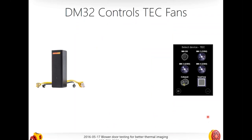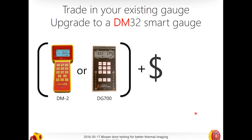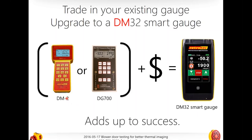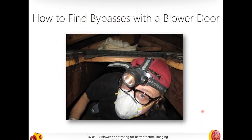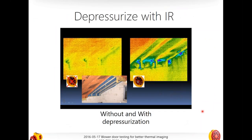For those using DG700s: you can actually run any of your Energy Conservatory fans using a DM32 with a speed control adapter, so you don't have to make a big investment in new equipment. And up until the end of this year, RetroTech will be taking trade-ins — DM2 or DG700 — and applying that trade-in value toward a DM32 smart gauge. Go to RetroTech.com and talk to sales for the trade-in value.